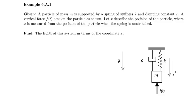Alright, so in this example we have a particle of mass m, which is supported by a spring of stiffness k and a damping constant element c, and we're told a vertical force f(t) acts on the particle as shown. We're asked to let x describe the position of the particle, where x is measured from the position of the particle when the spring is unstretched.